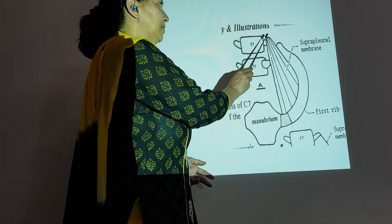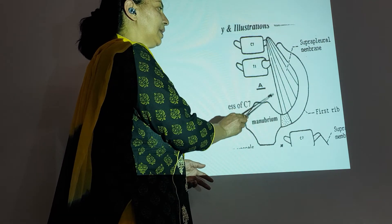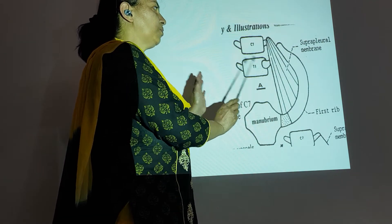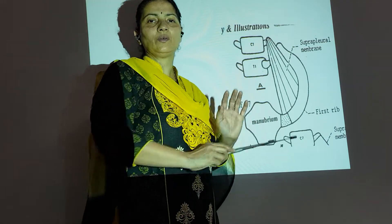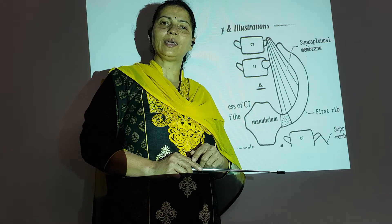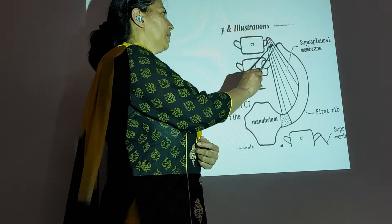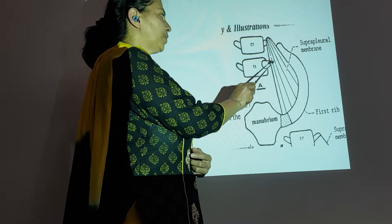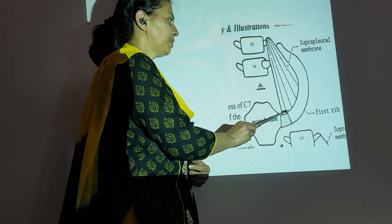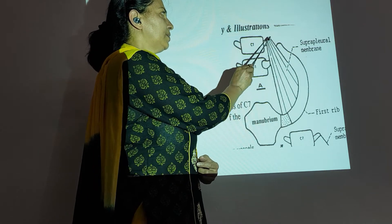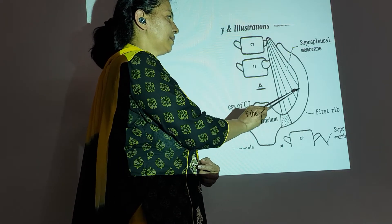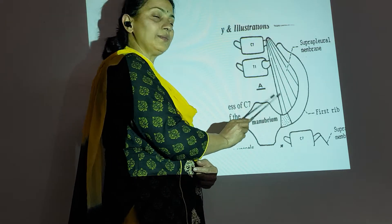It is covering the thoracic inlet on both sides. Here we are seeing it on the left side. It is triangular in shape. This is the apex and this is the base.